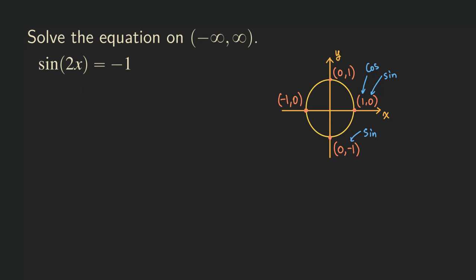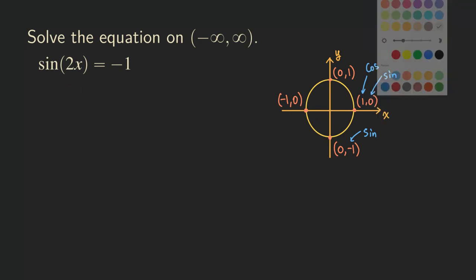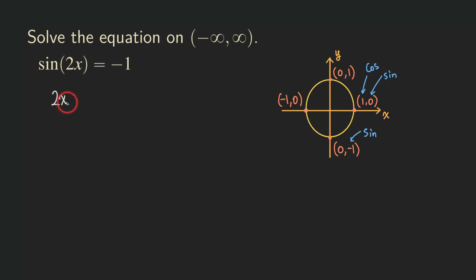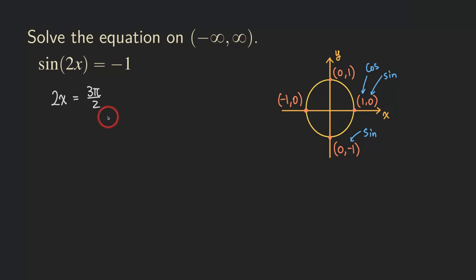Let's write this down. The angle in this case — whatever is inside the sine function — is 2x. So we say that 2x is equal to 3π/2, because we picked this point and this point corresponds to the angle of 3π/2 when talking about an angle from 0 to 2π. But remember that because we are not restricting the interval, we can also include other co-terminal angles of this angle. So how do we get the next one — a larger angle that's co-terminal with 3π/2?